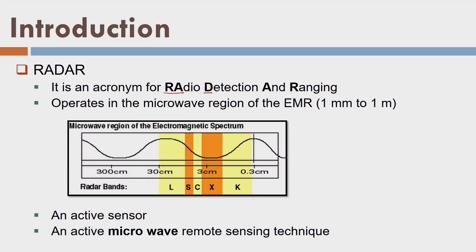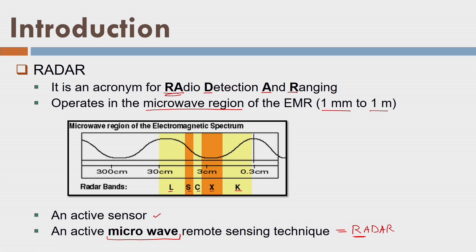Radar stands for Radio Detection and Ranging and it operates in the microwave region from 1 millimeter to 1 meter wavelength range. The radar bands are indicated here: L-band, S-band, C-band, X-band, and K-band. It is an active sensor. The radar works in the microwave wavelength range, which is why we use microwave remote sensing technique. You might be surprised that radar has 'radio detection' in its name but uses microwave — we will get into this as we progress.